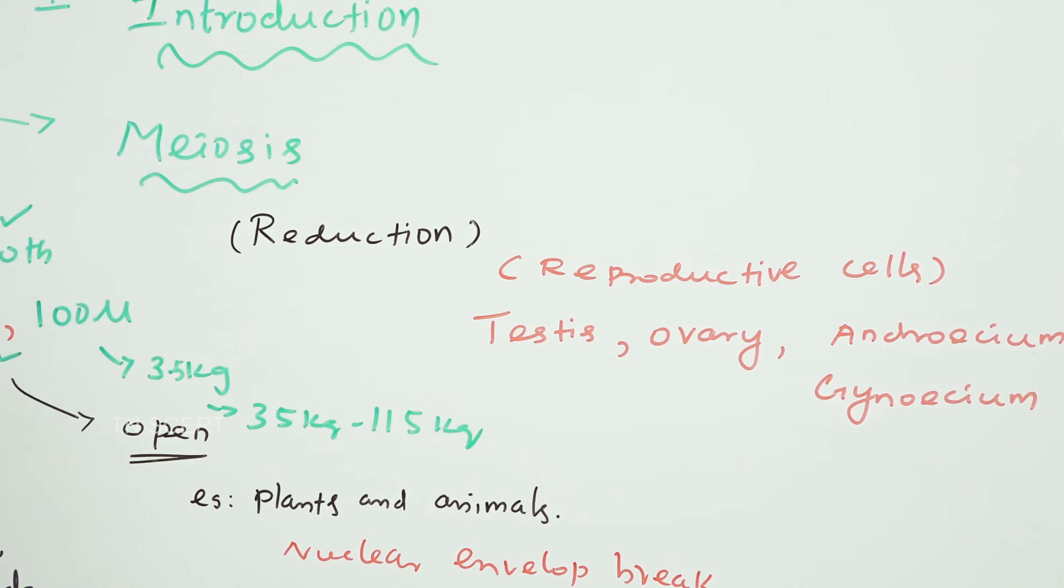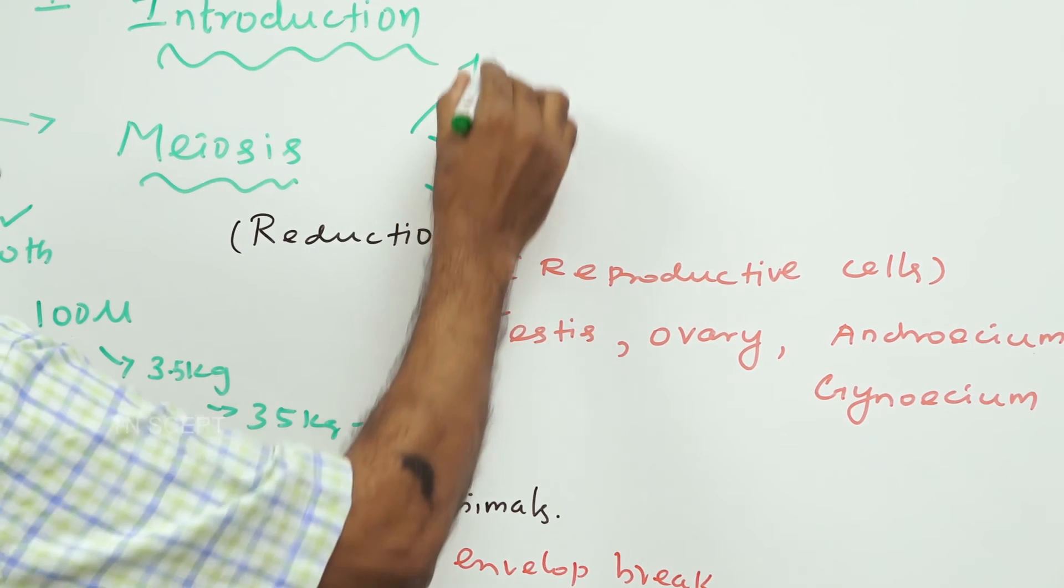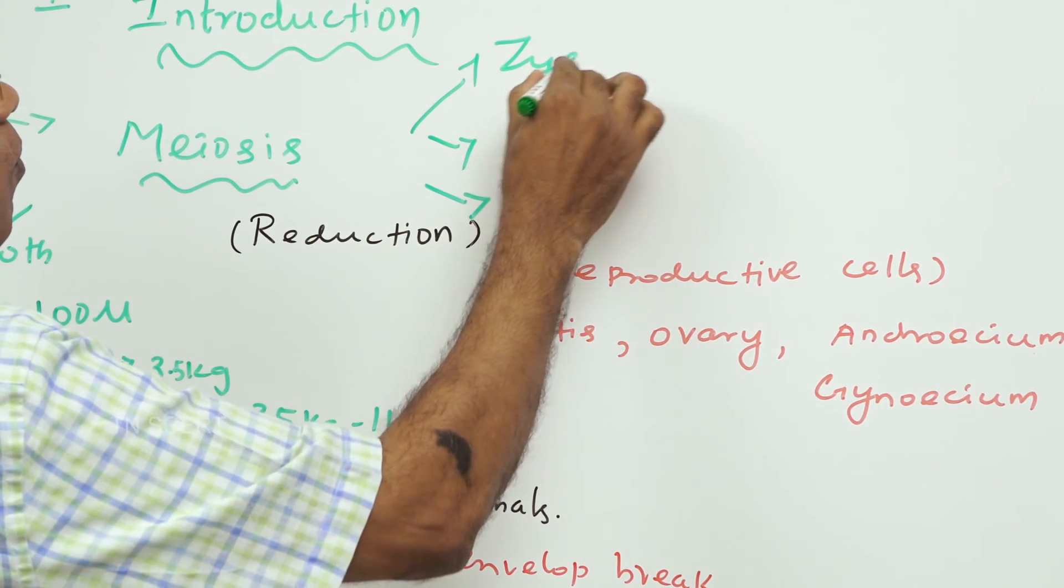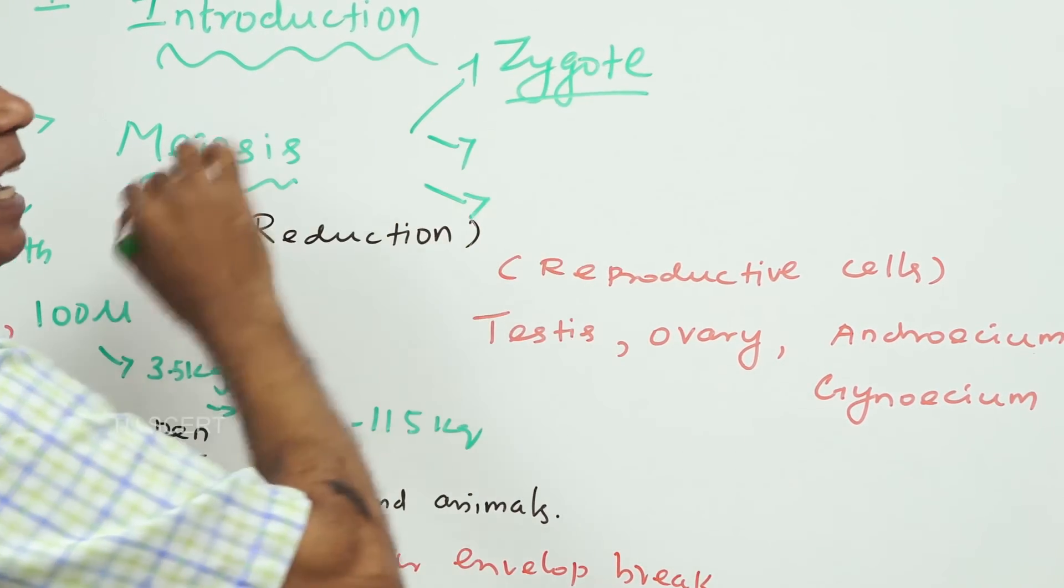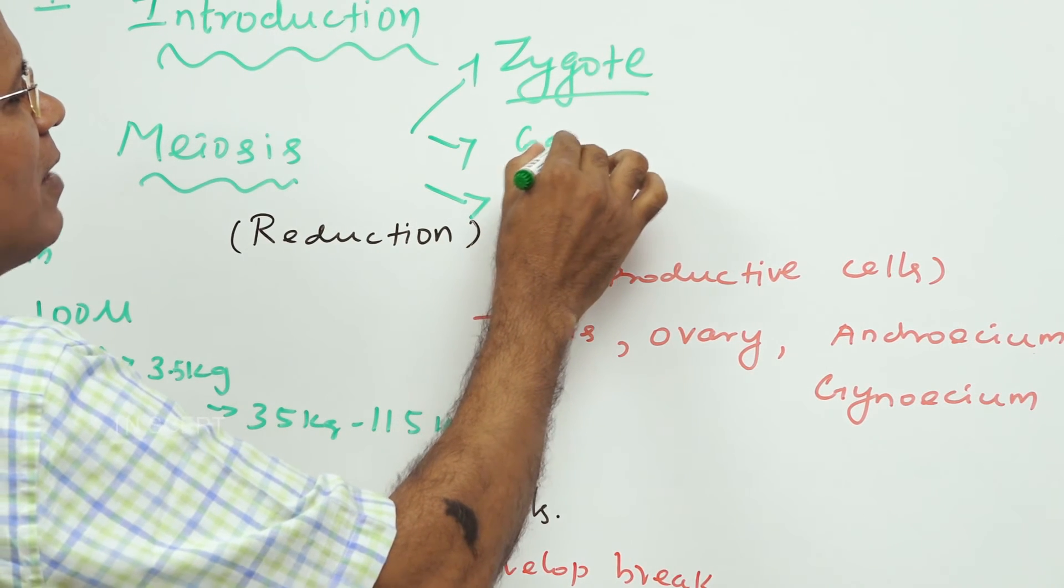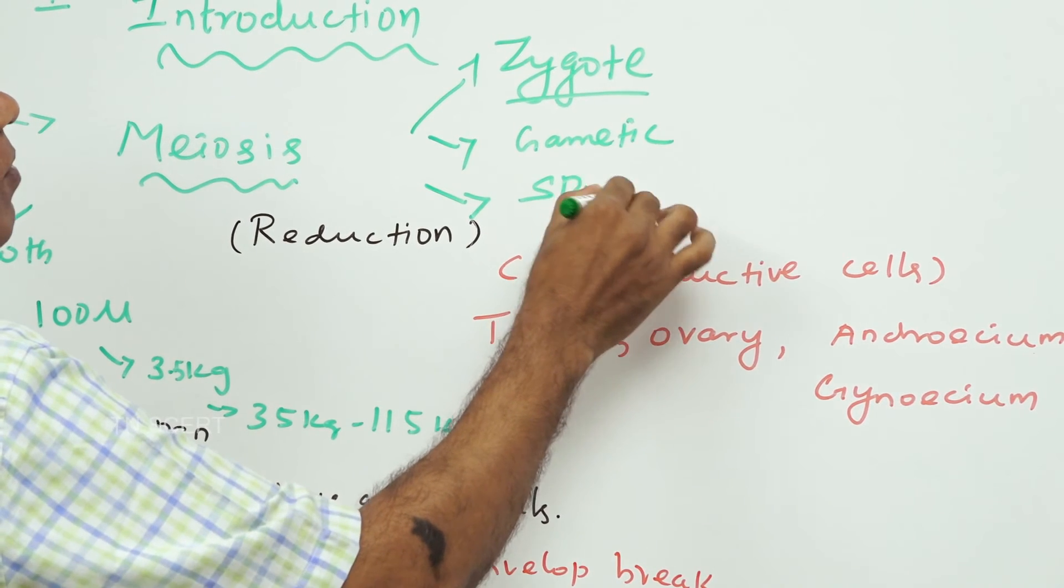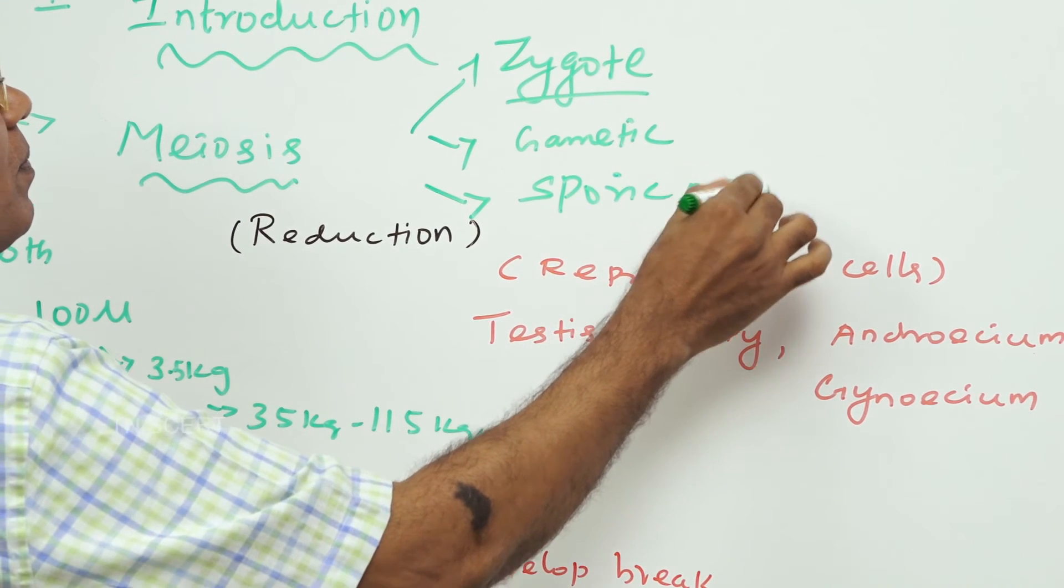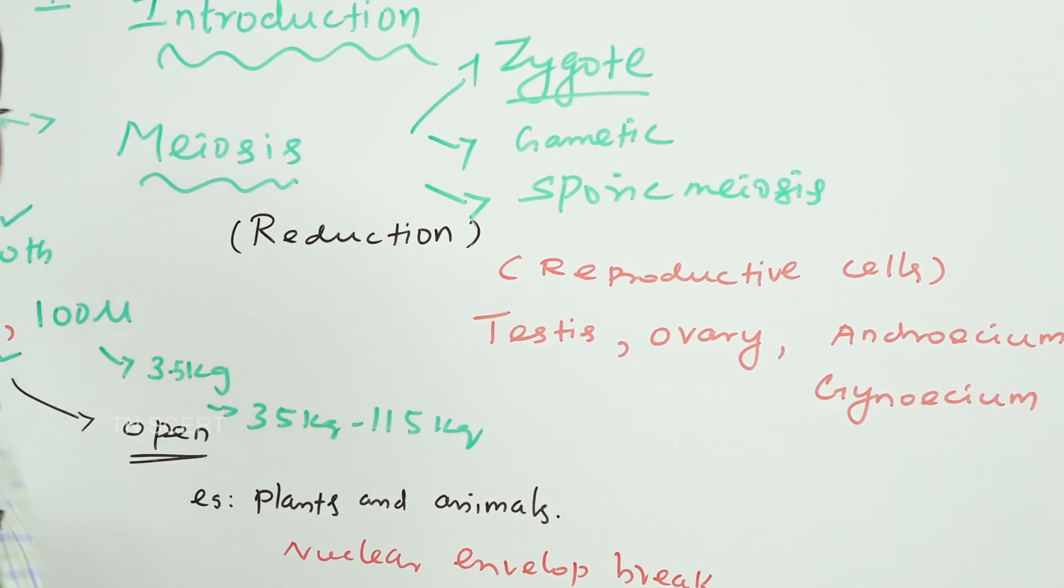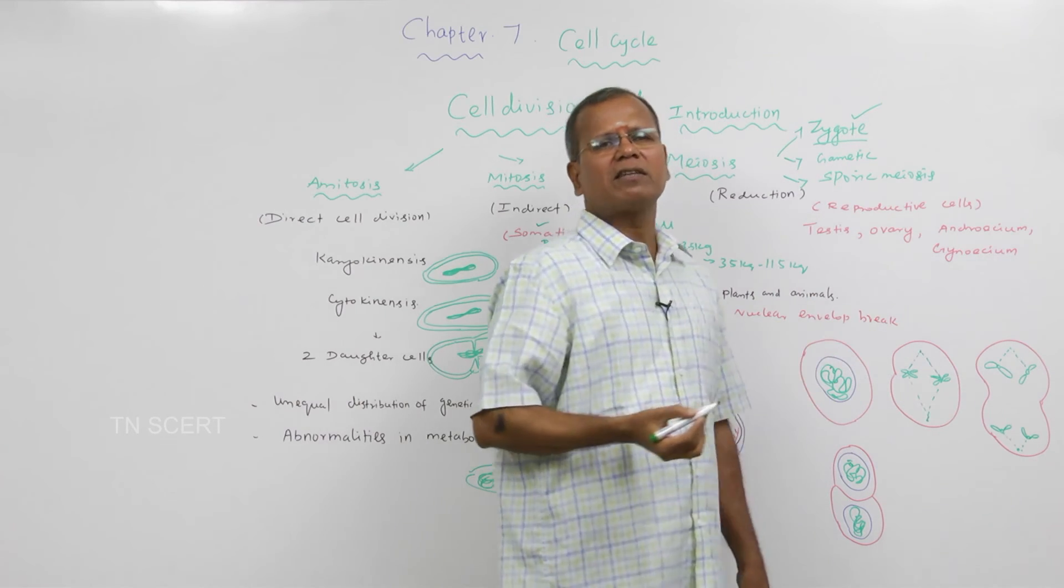In the end of meiosis, there are three types. One is zygotic meiosis, another is gametic meiosis, another is sporic meiosis. Meiosis takes place in the zygote itself. We are calling it as zygotic meiosis.